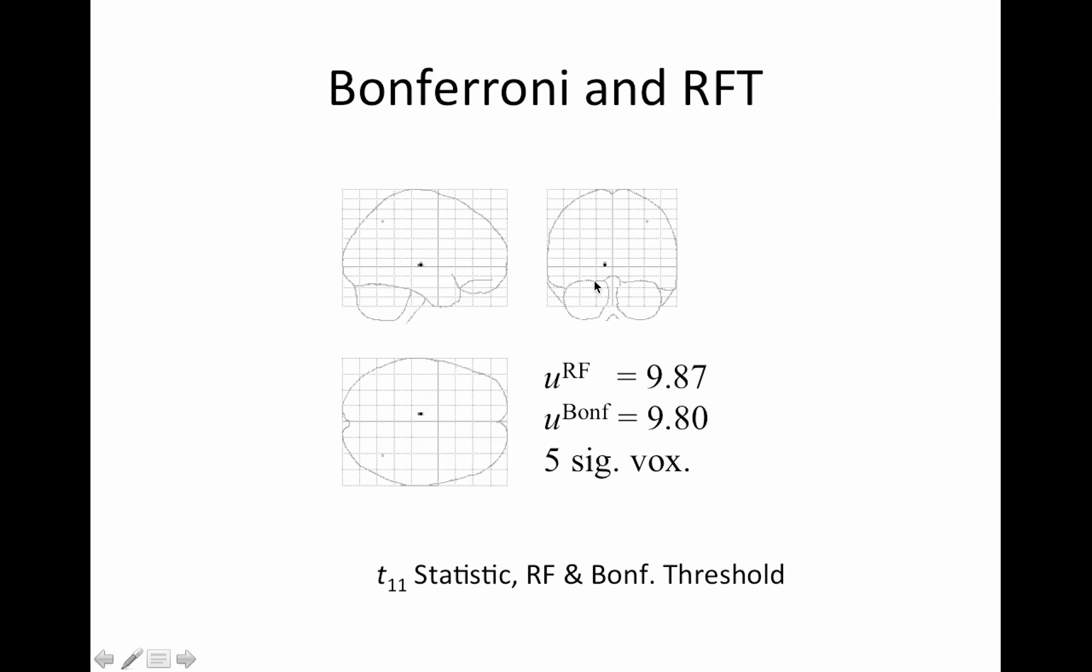Anyway, who cares about that? The point is, Bonferroni random field theory actually kind of match up here and you end up with five significant voxels with both. This is just an 11 subject study. But again, rest assured, we use cluster-wise random field theory typically and works much better.